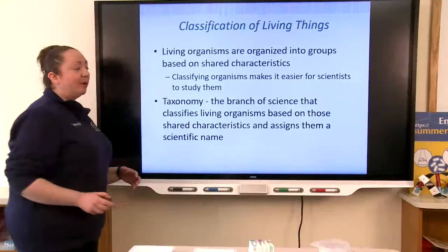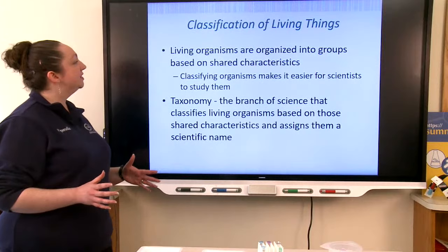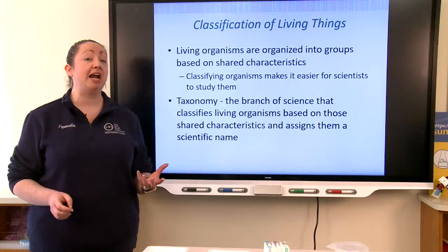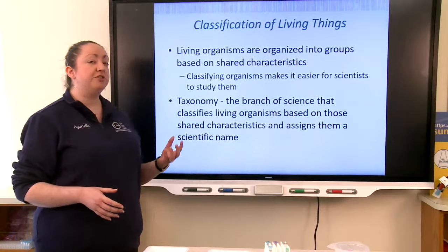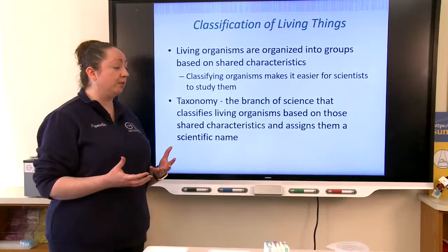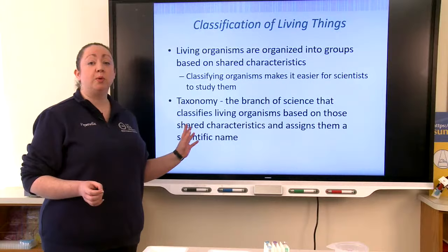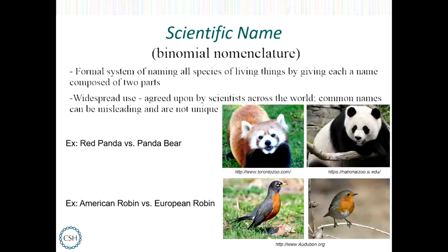I'd like to start my talk today by talking about the classification of living things. Different living organisms are organized into different groups based on shared characteristics, which makes it easier for scientists to study them. Taxonomy is the branch of science traditionally involved with identifying and classifying these different organisms. Taxonomists are also responsible for assigning organisms a scientific name, also referred to as binomenclature — a formal system of naming all living organisms giving each a name composed of two parts.